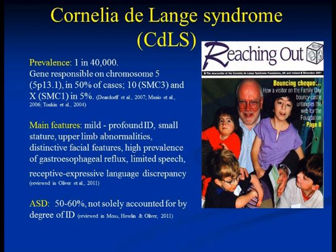So I'm going to focus now on Cornelia de Lange syndrome. This is a rare syndrome — around 1 in 40,000 individuals affected. The gene responsible is on chromosome 5 for around 50% of individuals, and other cases of different mechanisms are reported in a further 5%. CdLS is associated with mild to profound levels of intellectual disability, a number of physical health problems and physical differences. The literature is very consistent in suggesting that around 50% to 60% of people with Cornelia de Lange syndrome score above cut-off for autism spectrum disorder, across a range of different measures and studies using both screening tools and observational assessments.